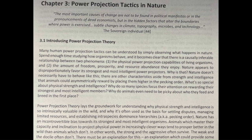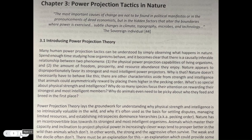Power projection theory lays the groundwork for understanding why physical strength and intelligence is so intrinsically valuable in the wild, and why it's so often used as the basis for settling disputes, managing limited resources, and establishing intraspecies dominance hierarchies — a.k.a. pecking order. Nature has an incontrovertible bias towards its strongest and most intelligent organisms. Animals which master their capacity and inclination to project physical power in increasingly clever ways tend to prosper better in the wild. In other words, the strong and the aggressive often survive. The weak and the docile often don't.